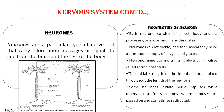Here I have written myelinated neurons and non-myelinated neurons. So what is the difference between myelinated neurons and non-myelinated neurons? In the myelinated neurons, myelin sheath is present, whereas in the non-myelinated neurons it does not have any myelin sheath.